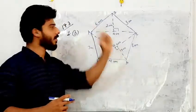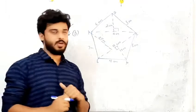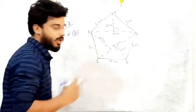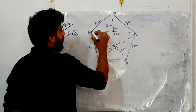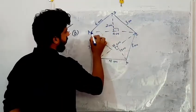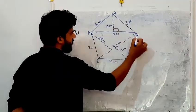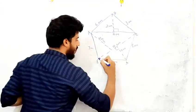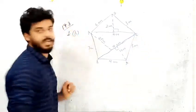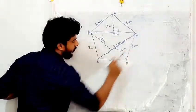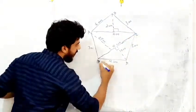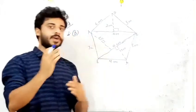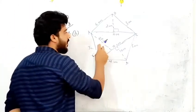Now we are on to our next figure — this is a pentagon because it has five sides. This pentagon can be divided into three triangles. Looking at the pentagon: triangle ABC is the first part, triangle AEC is the second triangle, and triangle EDC is our third triangle. These three triangles join to form the pentagon.